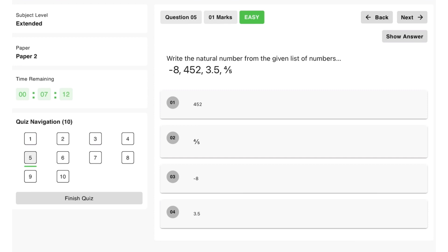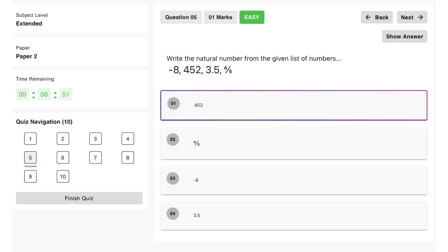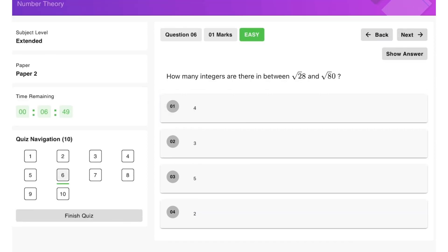write the natural number from the given list of numbers. So as we know, natural numbers are basically positive numbers and they're whole numbers. So when we look at this list, negative 8 is a negative number. So that's out. 3.5 and 4 over 5 are both what we say as fractional numbers or decimals. So that's also out. So 452 is the answer for this one.